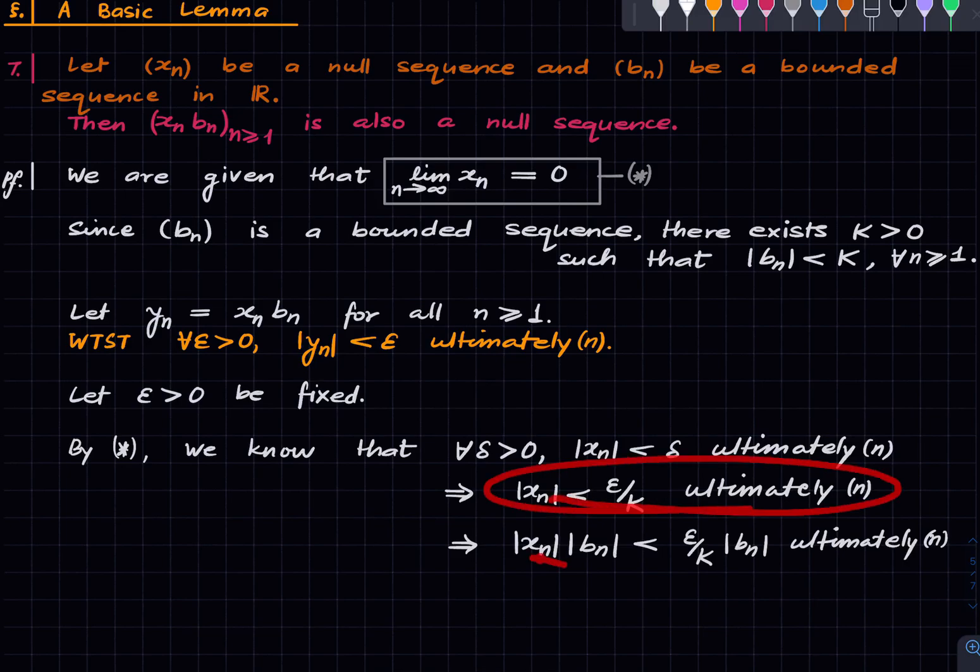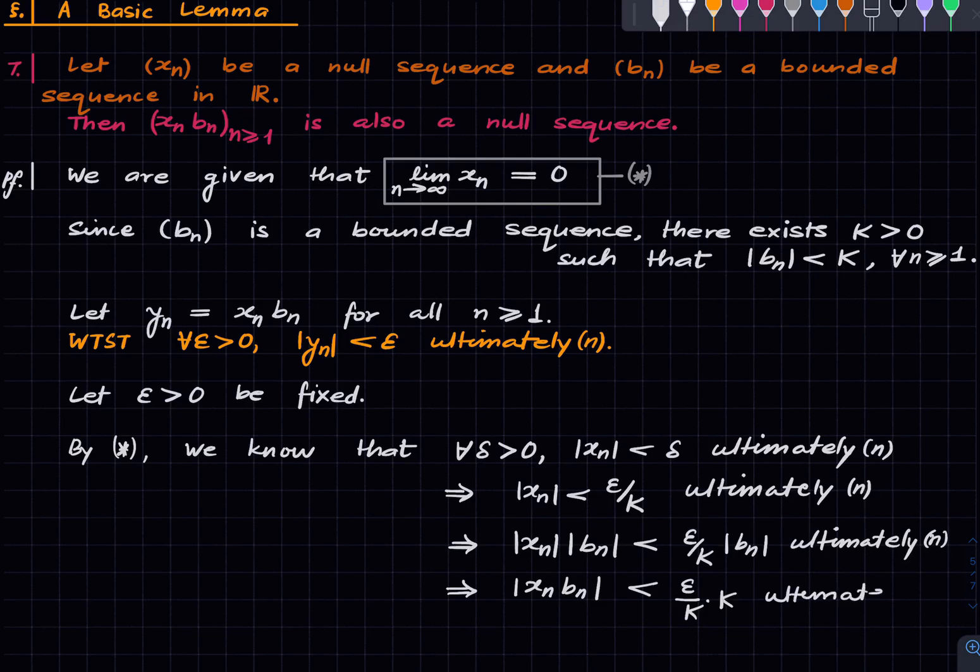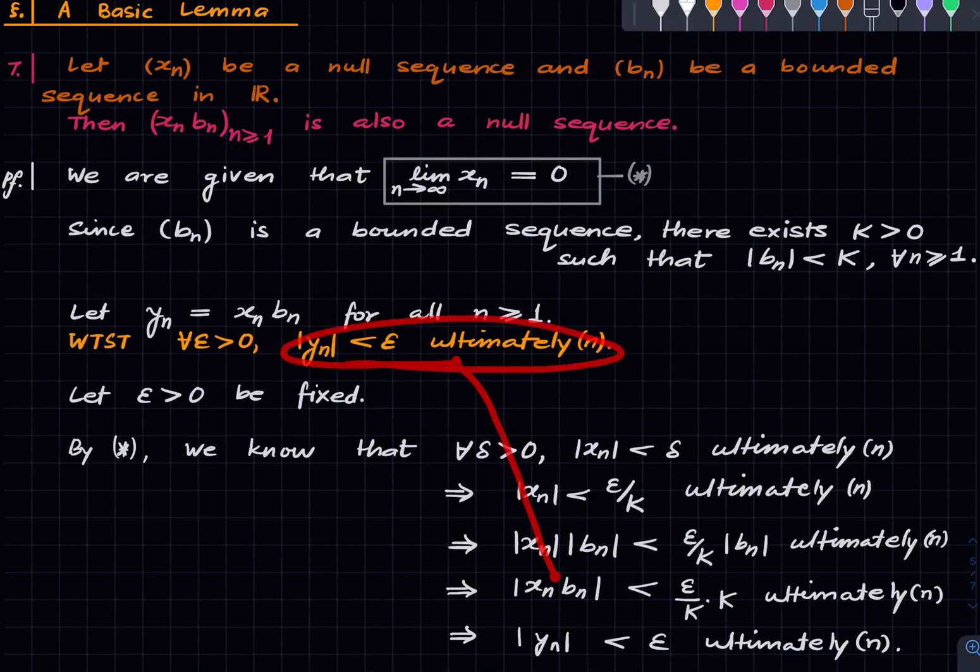This implies that the absolute value of xn is less than epsilon by K ultimately. If this is true, then obviously this is true—we just multiplied both sides by K. But now the absolute value of bn is at most capital K, so this implies that the absolute value of xn times the absolute value of bn, which I'm writing this way because this is how absolute values behave, is less than epsilon by K times K ultimately. All we did was use that the absolute value of bn is at most K. And this cancels out to give us: the absolute value of xn times bn is less than epsilon ultimately. And xn times bn is yn, and the right-hand side is epsilon, and this happens ultimately. And that's it. That proves what we wanted to prove. We wanted to establish this, and we have done that. So this finishes the proof of this theorem.